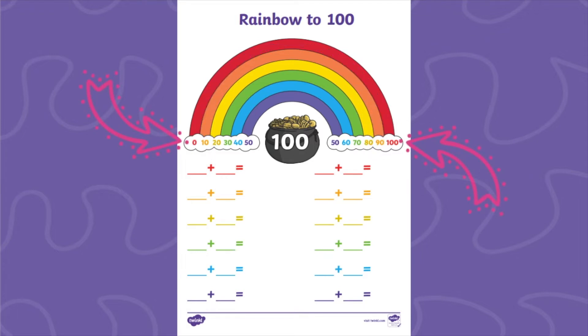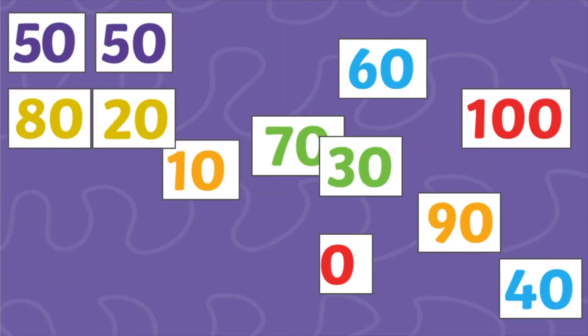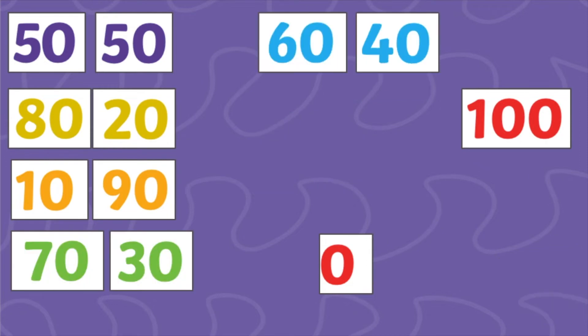However, if your children need a little bit more support, why not cut out all the numbers from the rainbow and see if your children can physically match together the correct numbers to make the number bonds to 100.